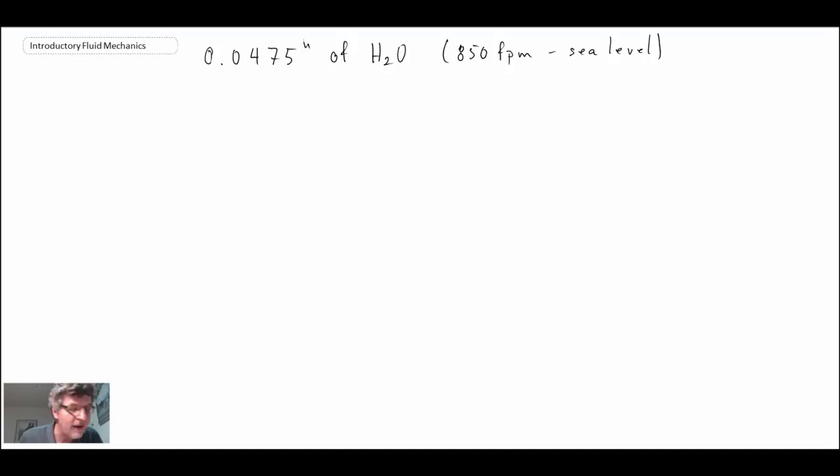To begin with, the incline manometer is giving us a pressure measurement in inches of water. So I'm going to convert that. I don't like working with British units, so I'm going to convert that to SI. So we get our delta H.